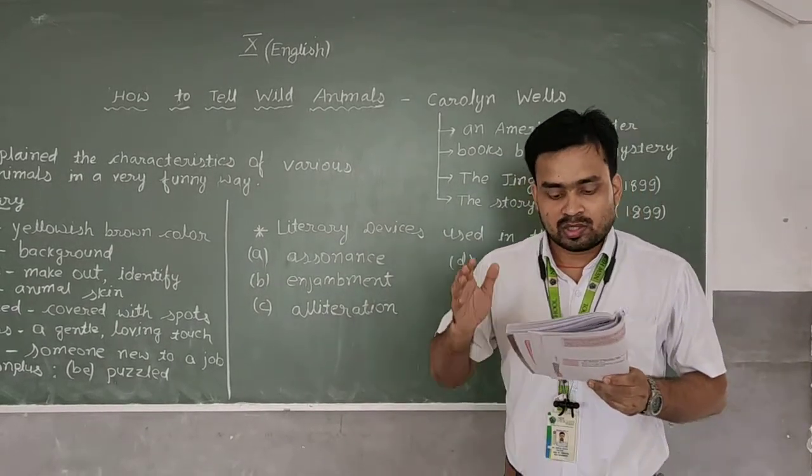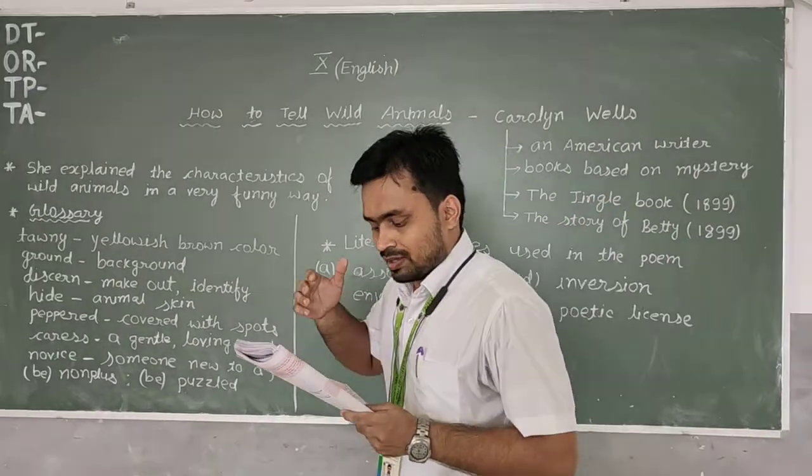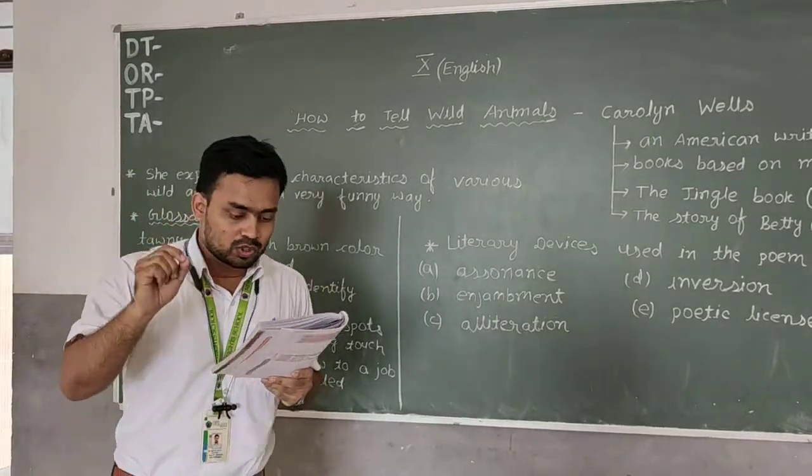So in the very first stanza, the poet Carolyn Wells explains about the identification of the Asiatic lion. In the very first line, assonance is used.